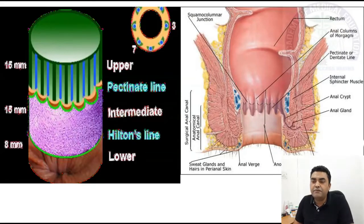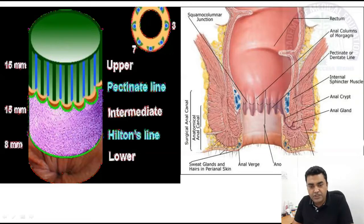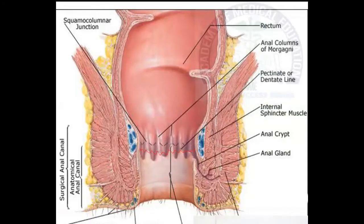To summarize: upper 15 mm, middle 15 mm, and lower 8 mm. If you see the diagram, this line is the pectinate line and this line is called Hilton's line. Above is the mucous area, then the intermediate zone, and then the cutaneous area. The upper area is 15 mm long and the lower area is 8 mm long.